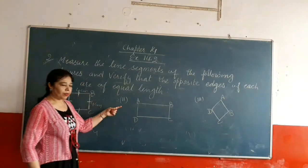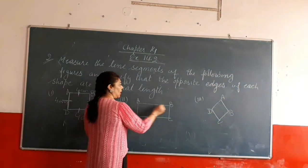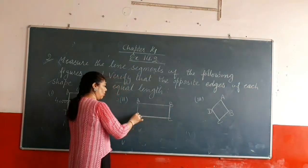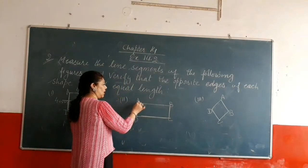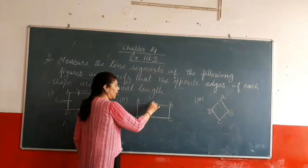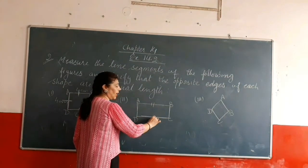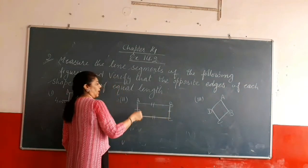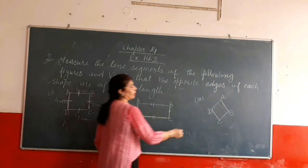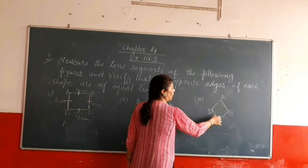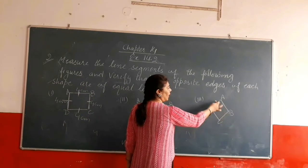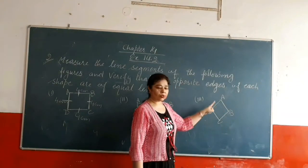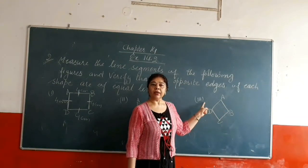In the same way, in the second part you have to measure the lengths of AB, BC, CD, and DA. Then check whether AB equals CD and whether BC equals DA. In the third part also, you have to measure the lengths and check whether the opposite sides are equal or not.